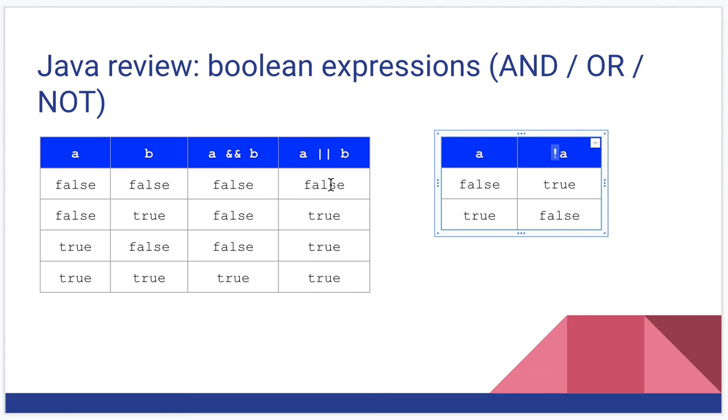For or, false or false gives us false. False or true gives us true. True or false gives us true. True or true gives us true. For that one, if any side of the expression is true, the entire thing is true.